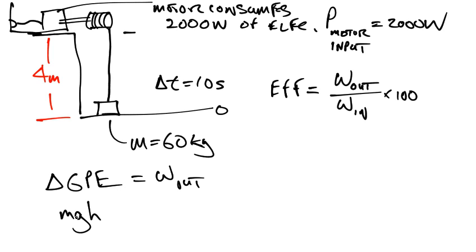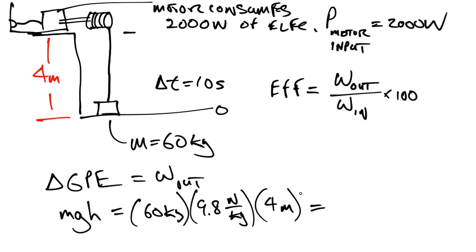That's the amount of work done on the mass. So now, let's calculate this. The mass is 60 kilos multiplied by 9.8 per kilo multiplied by a height of 4 meters. And that's going to give us, let's get out our trusty RPN.